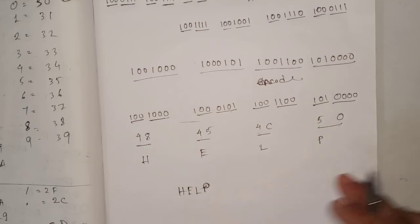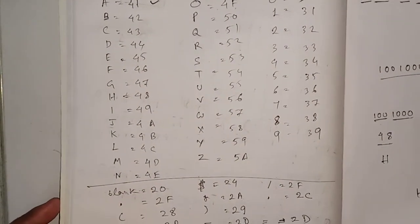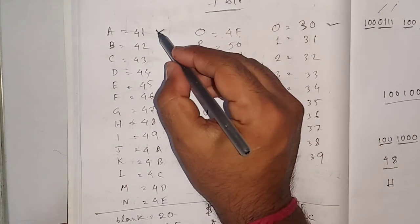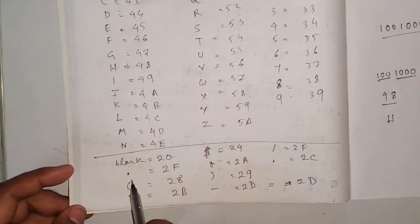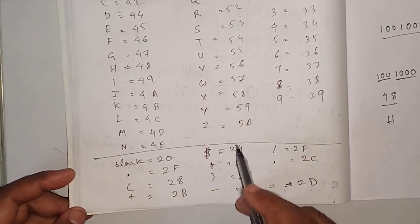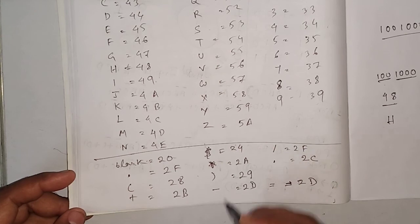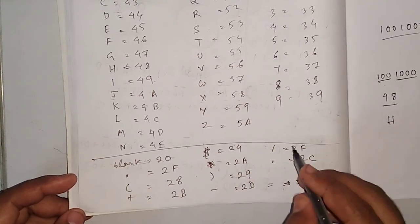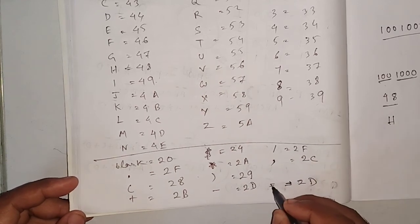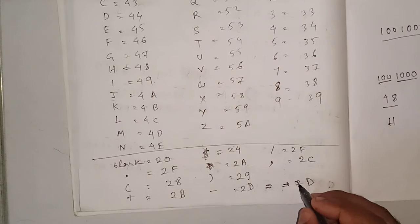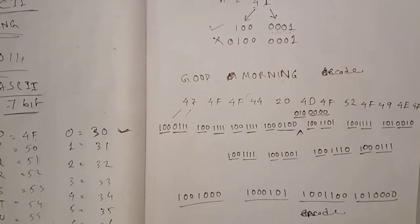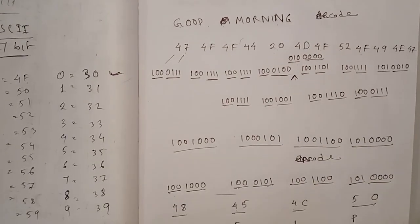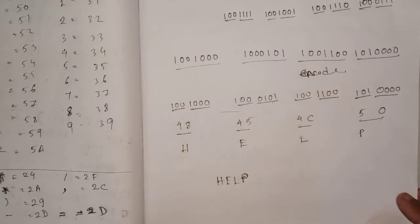Let me show you the table again. In its simplest form, how many things do you need to know? The value of A (41), the value of zero (30), and a few special symbols: blank (20), dot (2E), open bracket, plus (2B), dollar (24), star (2A), close bracket (29), minus (2D), division (2F), single quote (2C), and equal to (3D). You can easily get all values from these. This is the easiest way to convert English messages to binary language and binary back to English.